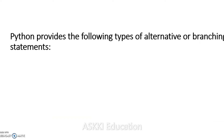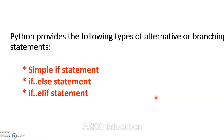In Python, there are the following types of alternative or branching statements. The first one is the simple if statement. The second is the if-else statement. And the third is the if-elif statement — elif is the short form of else-if. The simple if statement is the most basic branching. The if-else statement provides two-way branching.